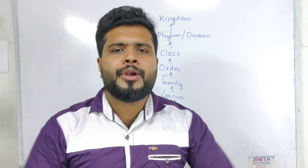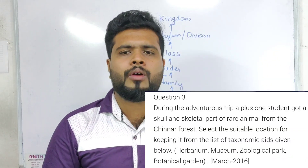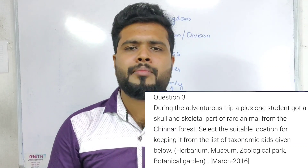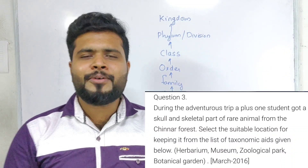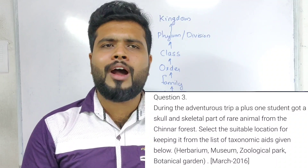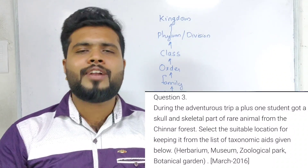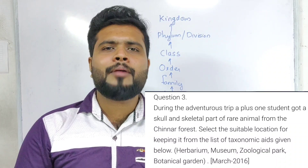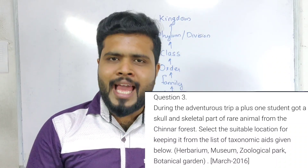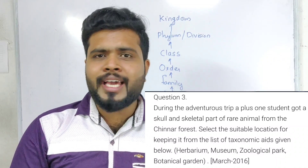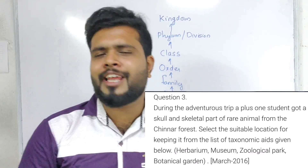Next question: during an adventurous trip, a Plus One student got a skull and skeletal part of a rare animal from Chinnar forest. Select the suitable location for keeping it from the list of taxonomical aids: herbarium, museum, zoological park, and botanical garden. A herbarium is for plants and dried leaves and flowers.